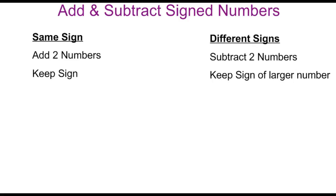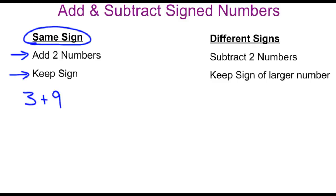The first case is if the signs of our numbers are exactly the same. If they are, we're simply going to add the values of the two numbers and keep the sign that the numbers have. So for example, if we had 3 plus 9, these are both positive numbers, so we would add the 3 and the 9 and get 12. And since they're both positive, we just keep the sign and our solution would be positive 12.